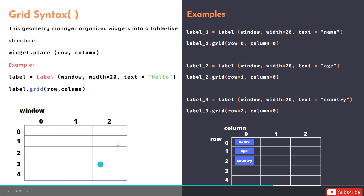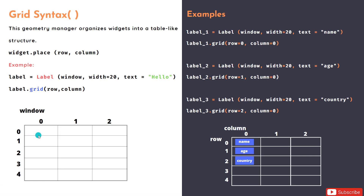To place a widget in the grid, you create the label, call the grid method, and give row and column values. For example, row=0, column=0 places it at the top-left. Row=1, column=1 places it diagonally. Row=0, column=1 places it in the first row, second column. That's how grid works.